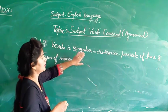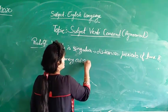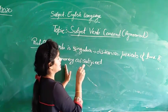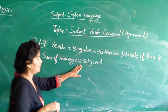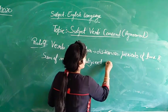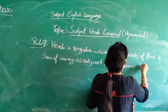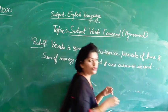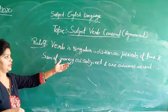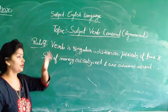The verb is always singular if distances, periods of time, and sums of money are referred to as the subject of the sentence. They are also assumed as a unit — a unit used to measure a certain quantity. When we are referring to a certain quantity, we use distances, period of time, and sum of money as subject, and then our verb is singular.